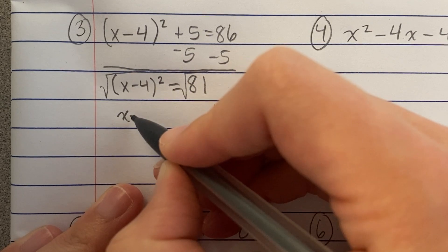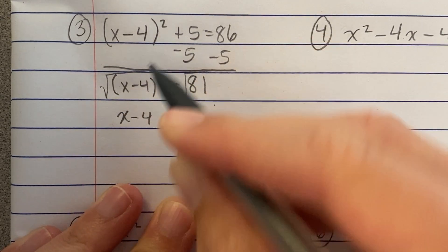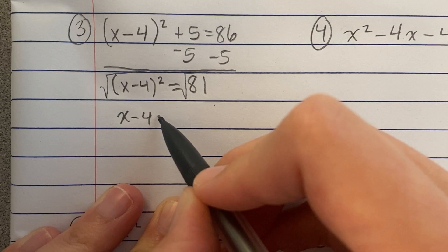So, when I square root, the square root and the squared are inverses. They undo each other and leave me with just what's inside, x minus 4.